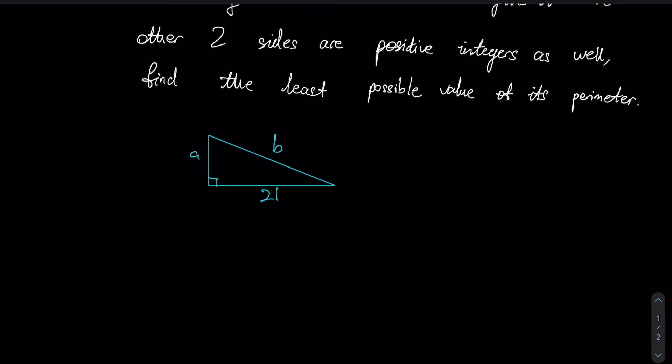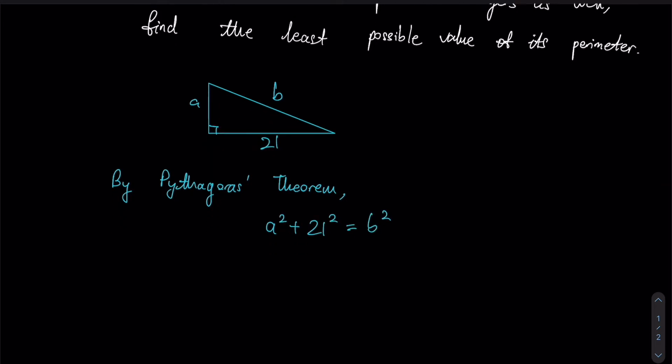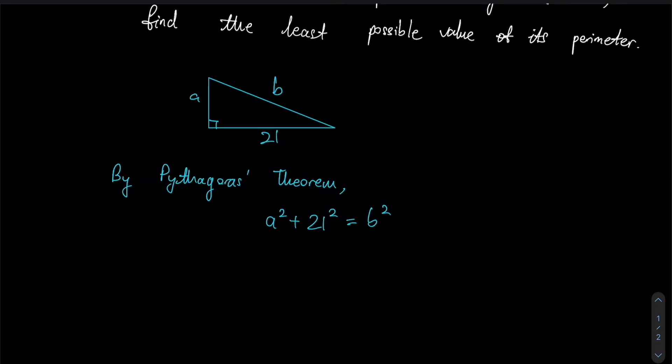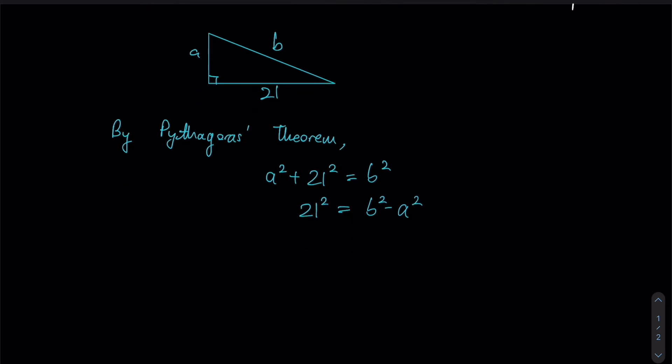So by Pythagoras theorem, a² + 21² should give us b². Now rearranging these variables by bringing a² to the right, we should have 21² = b² - a². At this stage, we should see that this is now a difference of squares and a chance for us to use our algebraic identity, and therefore this will give us (b + a)(b - a).